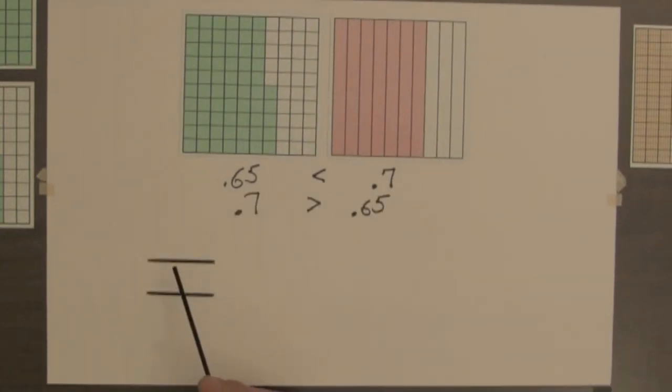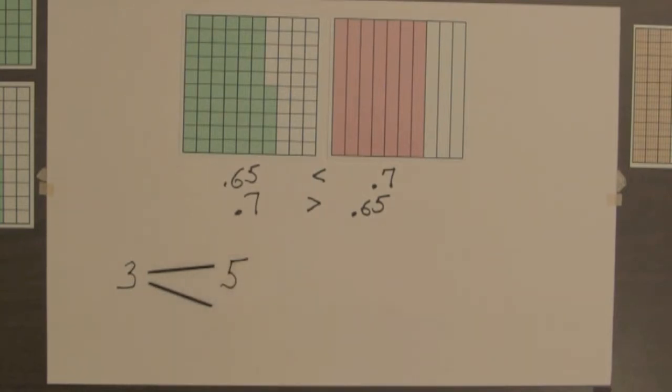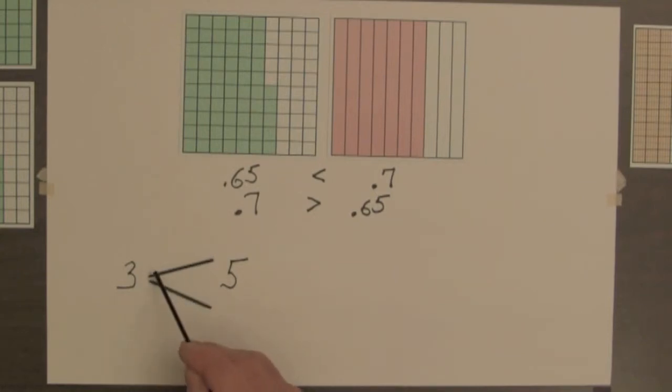Now the inequality symbol may have come from tipping the ends of the equality symbol. So this space is smaller than this space. We could say three is smaller than five because the opening here is smaller than the opening over here. Or they could have been tipped the other way. And then over a period of time these would have closed up so that we have the inequality symbols that we now have.